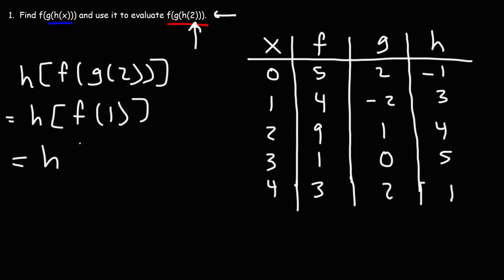Next, we need to evaluate f of 1. So here's f. Here's 1. They both intersect at 4. So f of 1 is 4.